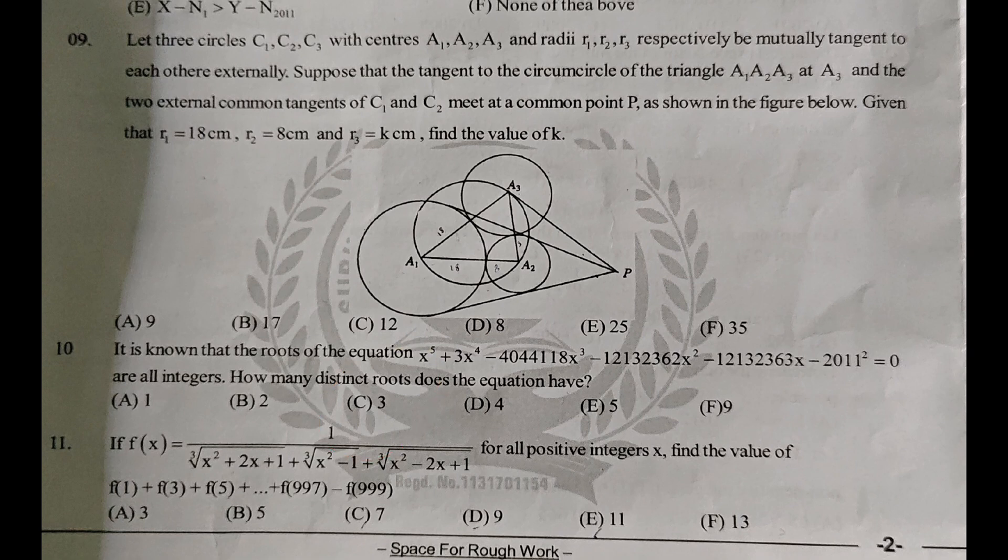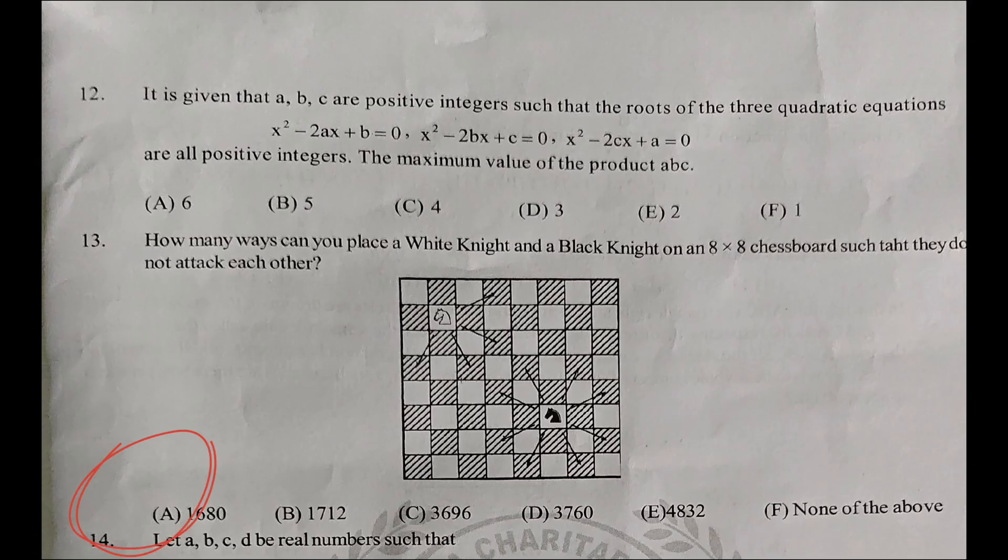If F(x) goes to equation, then find the value of F(1) + F(3) + F(5) + ... + F(997) - F(999). The answer is 3, then A, 2.